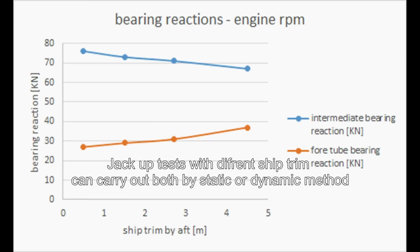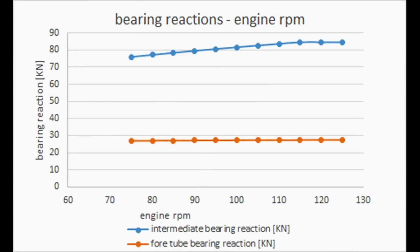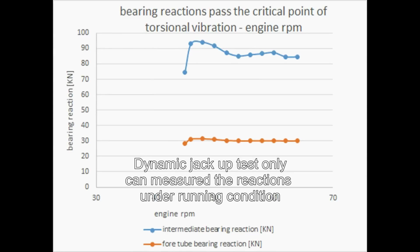Only by dynamic jackup test can bearing reactions be measured under different main engine RPM conditions, accounting for thermal expansions and torsional vibration critical points, where the intermediate bearing is affected more than the tube bearings.